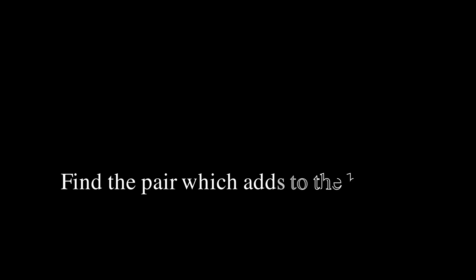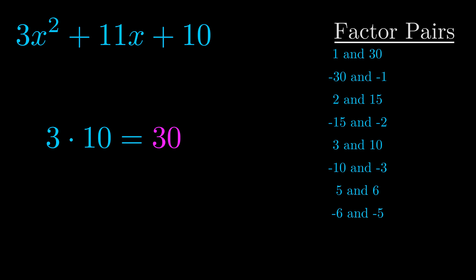The b value is the coefficient on the x term. That's the middle term, the one that we haven't done anything with yet. And really this is the only factor pair that we need.